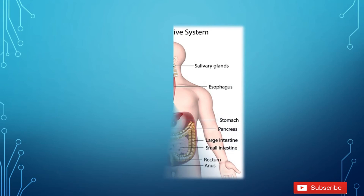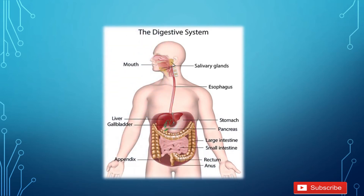The digestive system is a multiple-organ system in which different organs are involved. For example: mouth, salivary gland, oesophagus, stomach, liver, gallbladder, pancreas, large intestine, and small intestine.